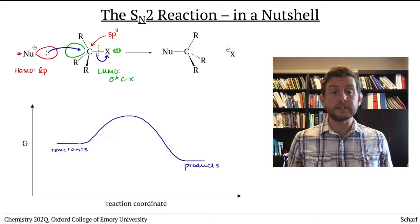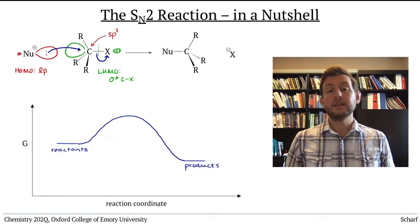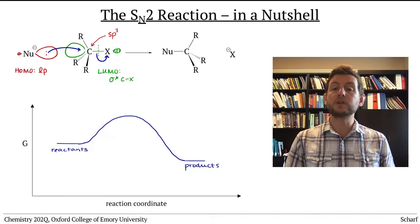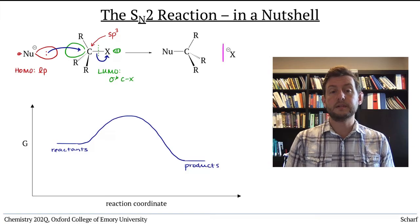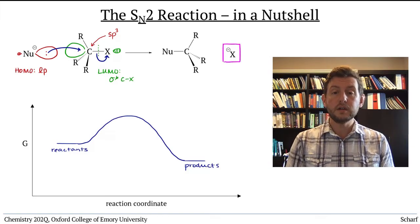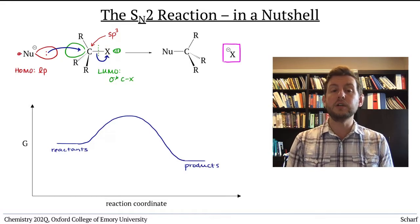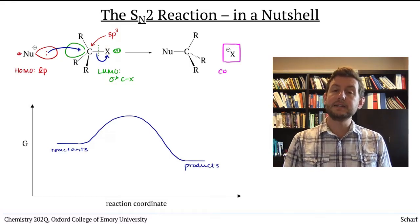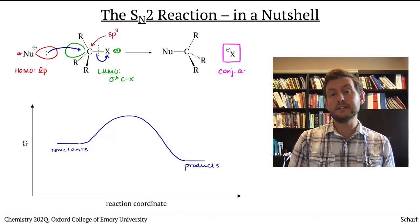Like all nucleophilic substitution reactions, the SN2 reaction requires a good leaving group. And just like leaving groups in nucleophilic acyl substitution, we can get a sense of how good a leaving group is by examining its conjugate acid's pKa.